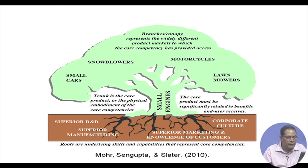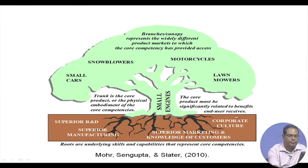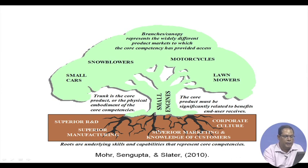In the tree analogy, small engines are the core competencies — the trunk of the tree. The trunk represents the core product, or the physical embodiment of core competencies. The core product must be significantly related to the benefits the end user receives. These small engines, as a core competency, have strong roots in superior R&D, superior manufacturing, superior marketing and knowledge of customers, and superior corporate culture.